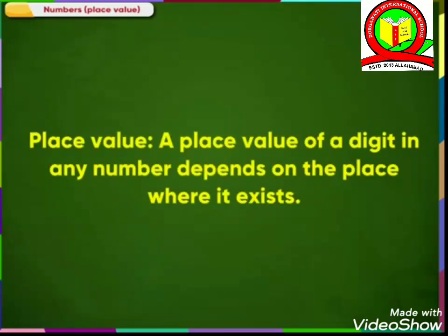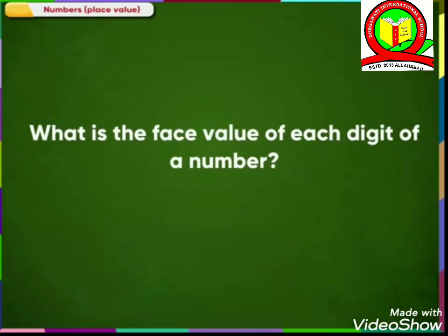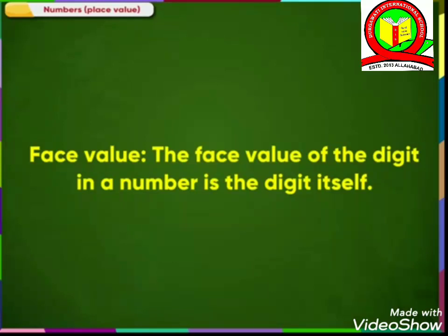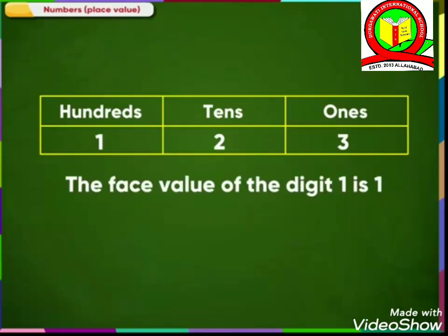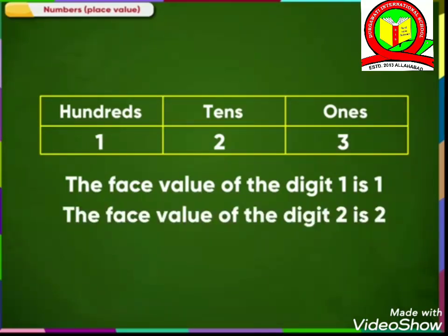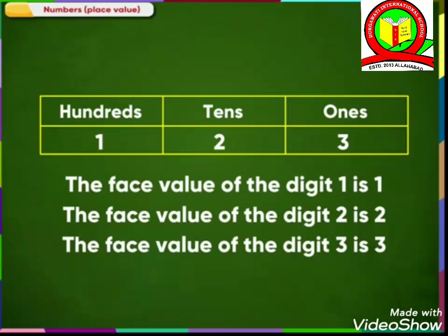The place value of a digit in any number depends on the place where it exists. What is the face value of each digit of a number? The face value of a digit in a number is the digit itself. For example, the face value of the digit 1 in the number 123 is 1. The face value of the digit 2 in the number 123 is 2. The face value of the digit 3 in the number 123 is 3.